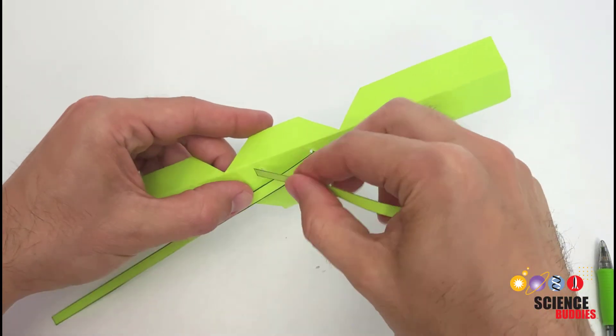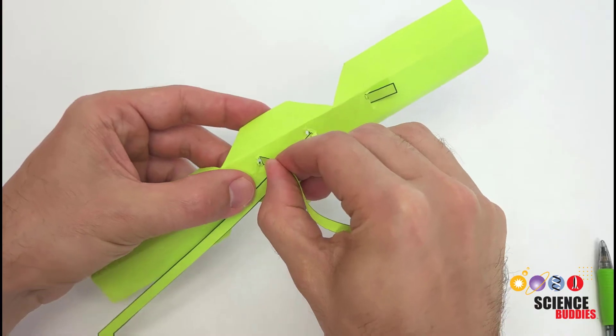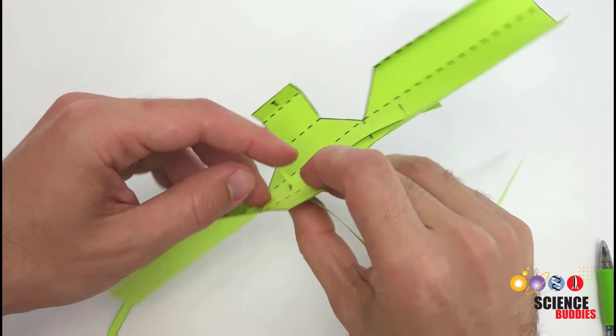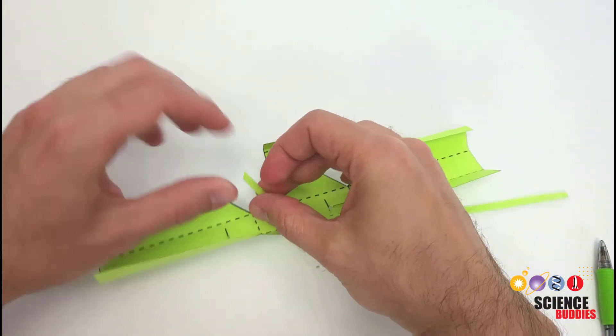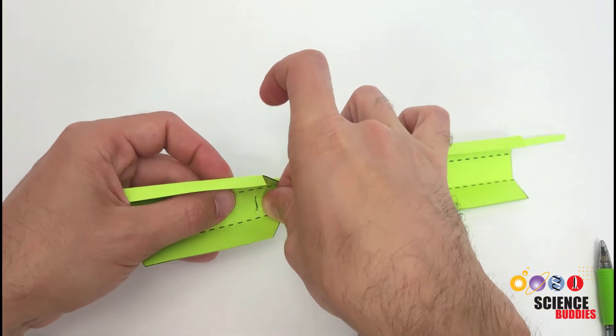Push the tendon through the slot from the back, pull it through, and then push it through the other slot from the front. Later on, we'll glue the tendons in place to the back of the gripper.